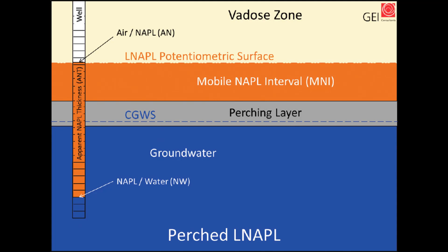Similarly, perched LNAPL occurs when a coarser interval exhibiting mobile LNAPL is underlain by a finer grained layer that inhibits vertical movement of LNAPL towards the underlying water table.